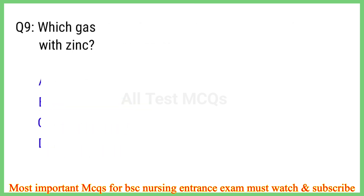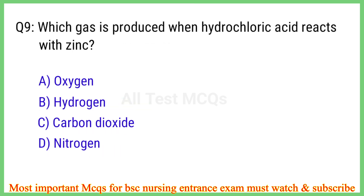Q9. Which gas is produced when hydrochloric acid reacts with zinc? The right answer is option B: Hydrogen.